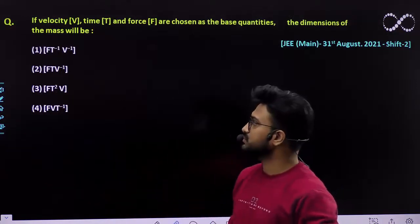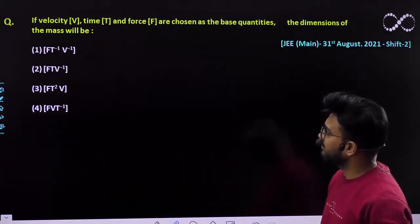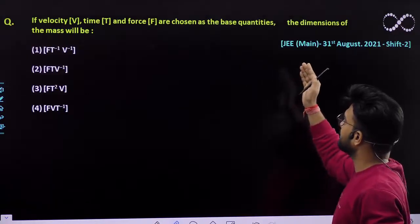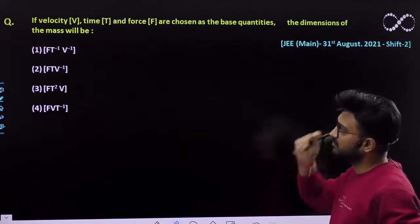So let us see this question first. The question says: If velocity v, time t, and force f are chosen as the base quantities, the dimension of the mass will be.